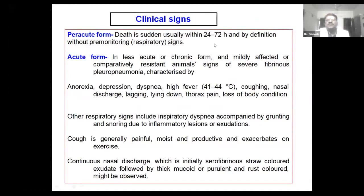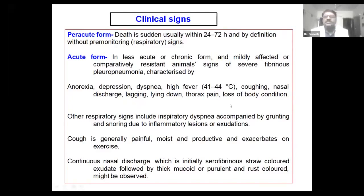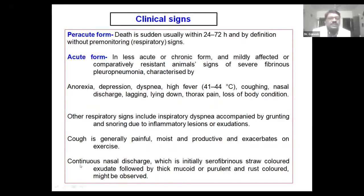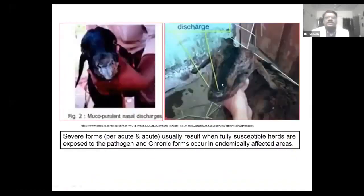In the per-acute form, there is sudden death within 24 to 72 hours with absent clinical symptoms. In the acute and chronic forms, you will get respiratory symptoms and other clinical signs including anorexia, depression, dyspnea, fever, coughing, nasal discharge, lagging behind, lying down, and thoracic pain. Other signs include inspiratory dyspnea accompanied by grunting and snoring sounds. Continuous nasal discharge is initially serosanguinous and straw-colored, followed by thick mucopurulent and rust-colored discharge.